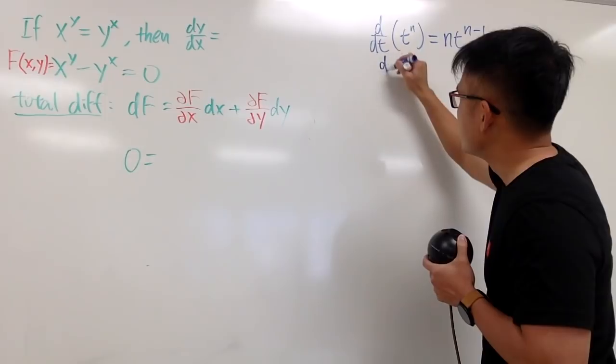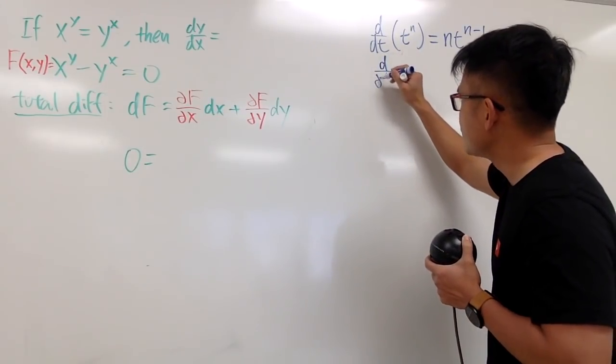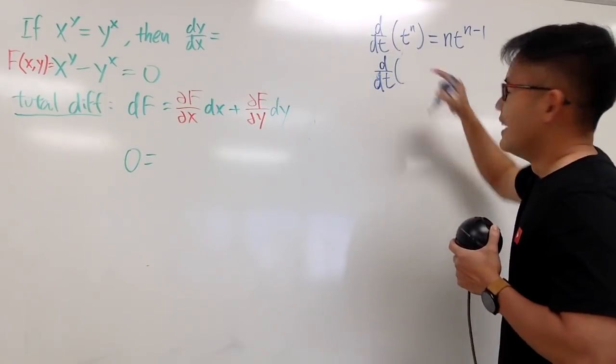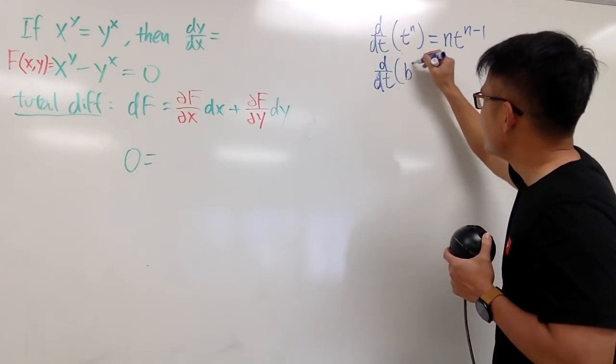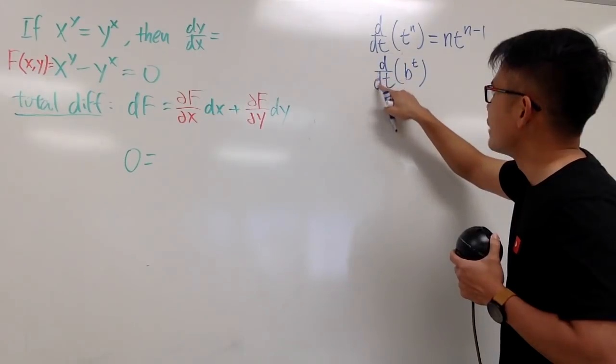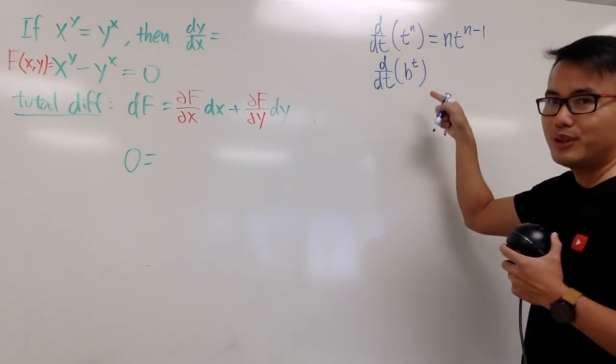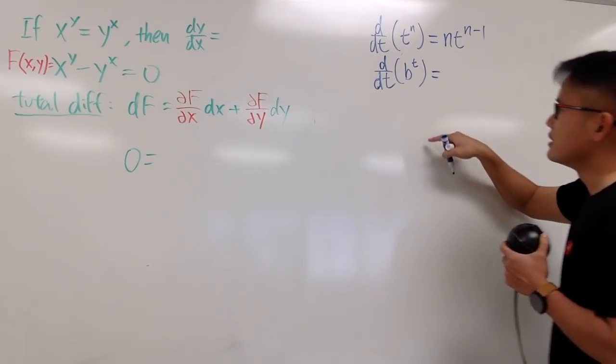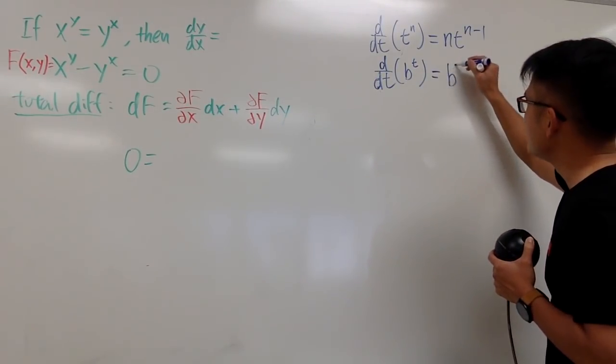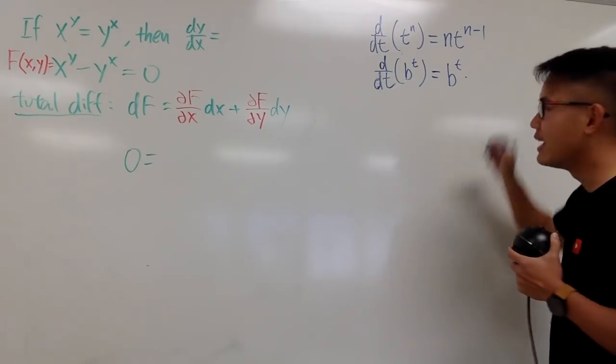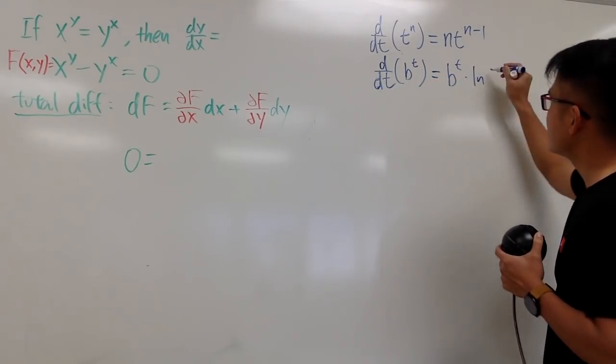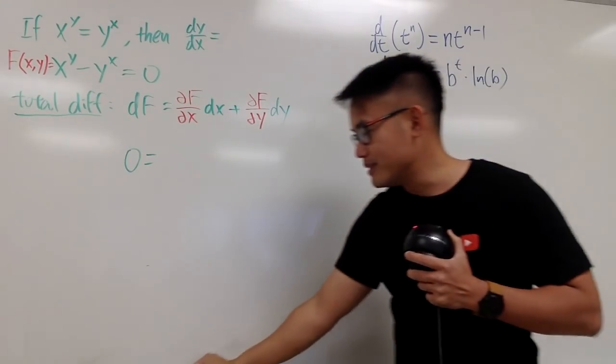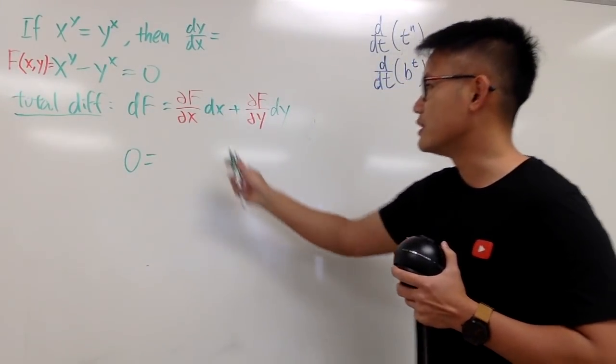Now, if you have d/dt of some number for the base raised to a t's power, this right here is an exponential situation. This was a power function, it's different. And the derivative of this is that you first repeat b to the t's power, and you multiply by ln of the base, which is ln b in our situation. That's the exponential derivative for that. Be careful with this.